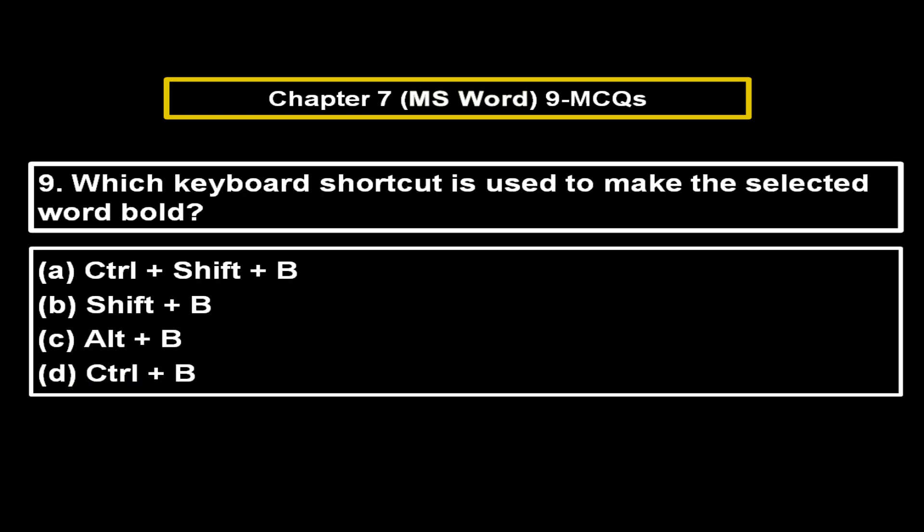Which keyboard shortcut is used to make the selected word bold? Option A: Ctrl+Shift+B. Option B: Shift+B. Option C: Alt+B. Option D: Ctrl+B. The right answer is Option D — Ctrl+B.